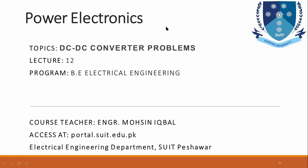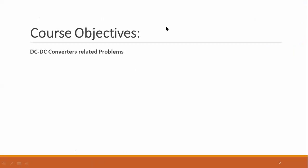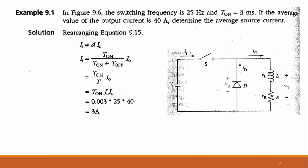Today we will go through some problems related to these converters. In the first example shown in the figure, the switching frequency is 25 Hz and the turn-on time T_on is 3 milliseconds. If the average value of the output current is 40 ampere, we must determine the average source current.